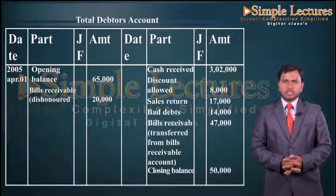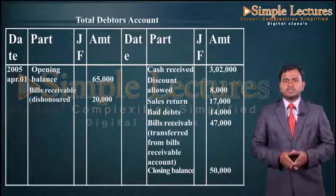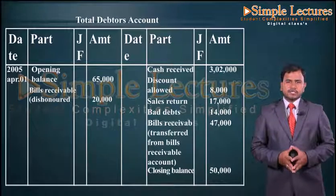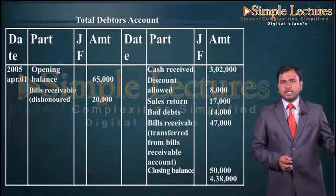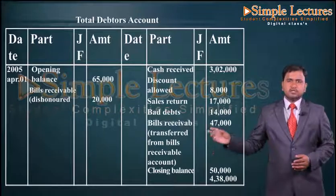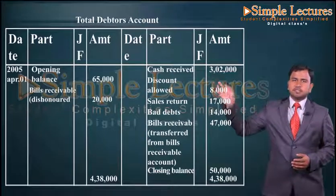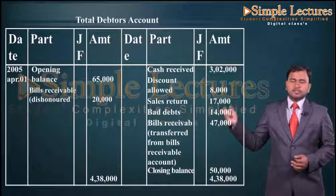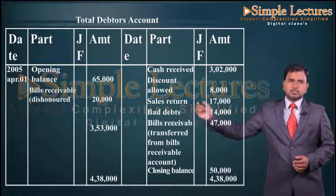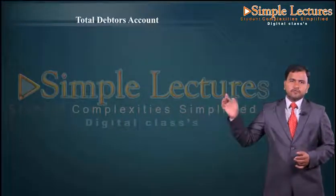We are going to close the total debtors account to find the difference which is nothing but the sales. The total of the credit side is four lakh thirty eight thousand; the same is recorded on the debit side. Four lakh thirty eight thousand minus the opening balance and bills receivable dishonored gives a difference of three lakh fifty three thousand, which is the sales — balancing figure.